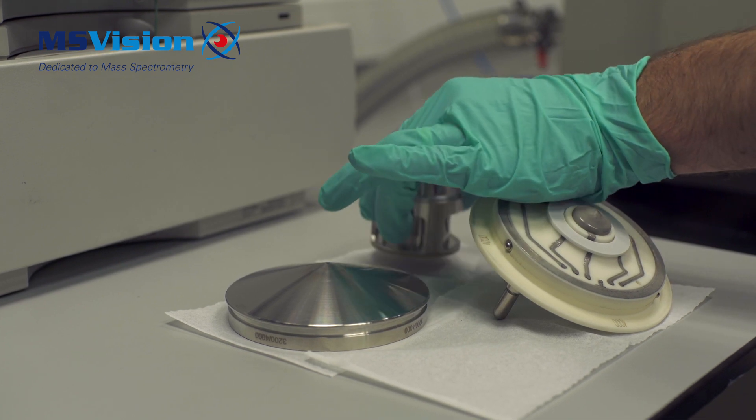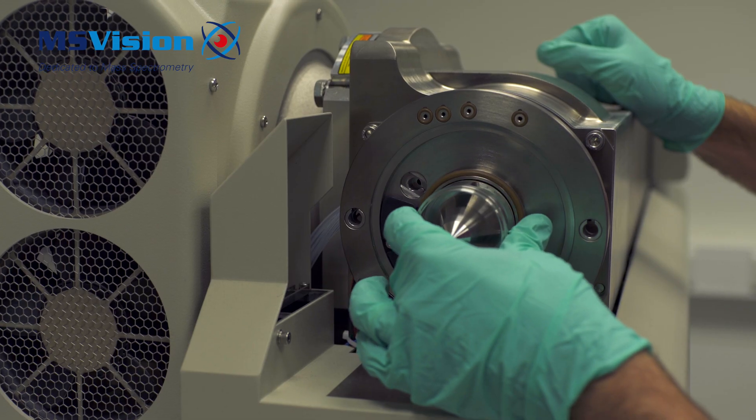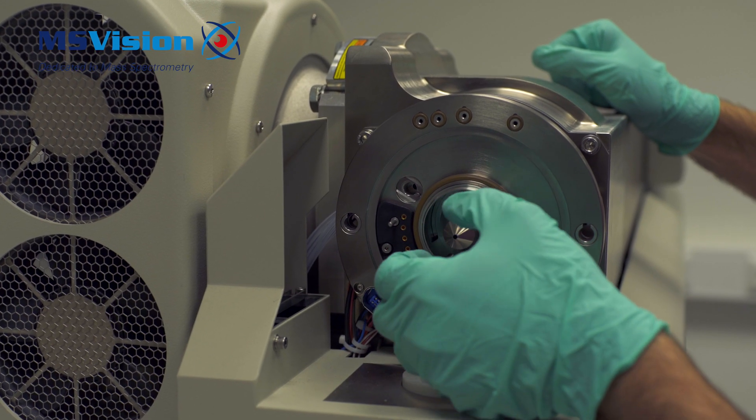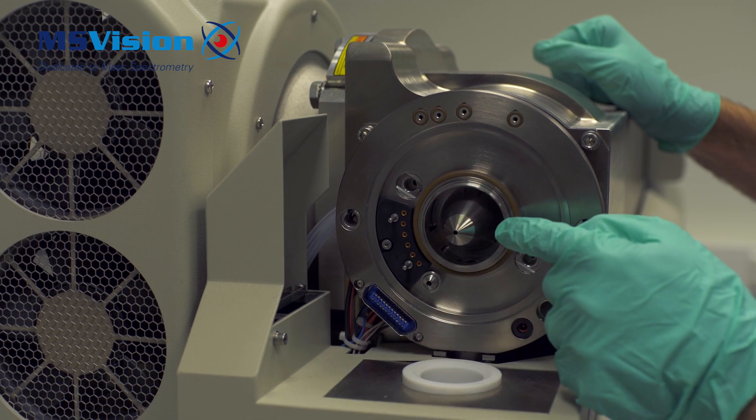To reassemble, first replace the skimmer by inserting the o-ring first and twist until it pushes in all the way.